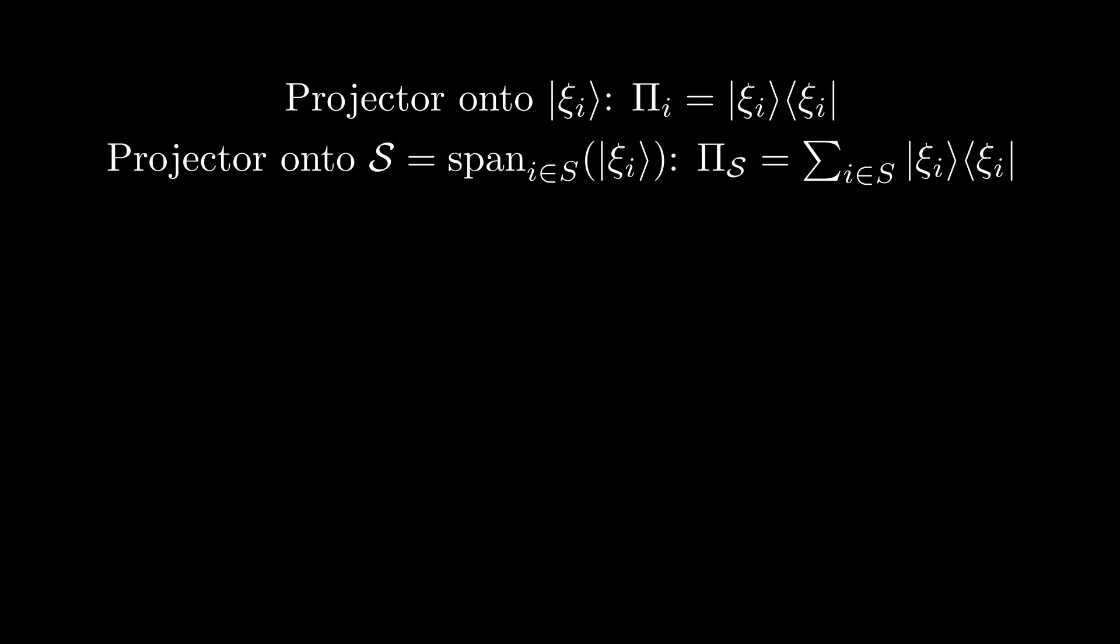Consequently, summing over a complete set of vectors that spans the Hilbert space simply gives us the identity operator, which leaves any state unchanged. If our complete set of vectors is continuous rather than discrete, we can instead write this condition as the following integral.